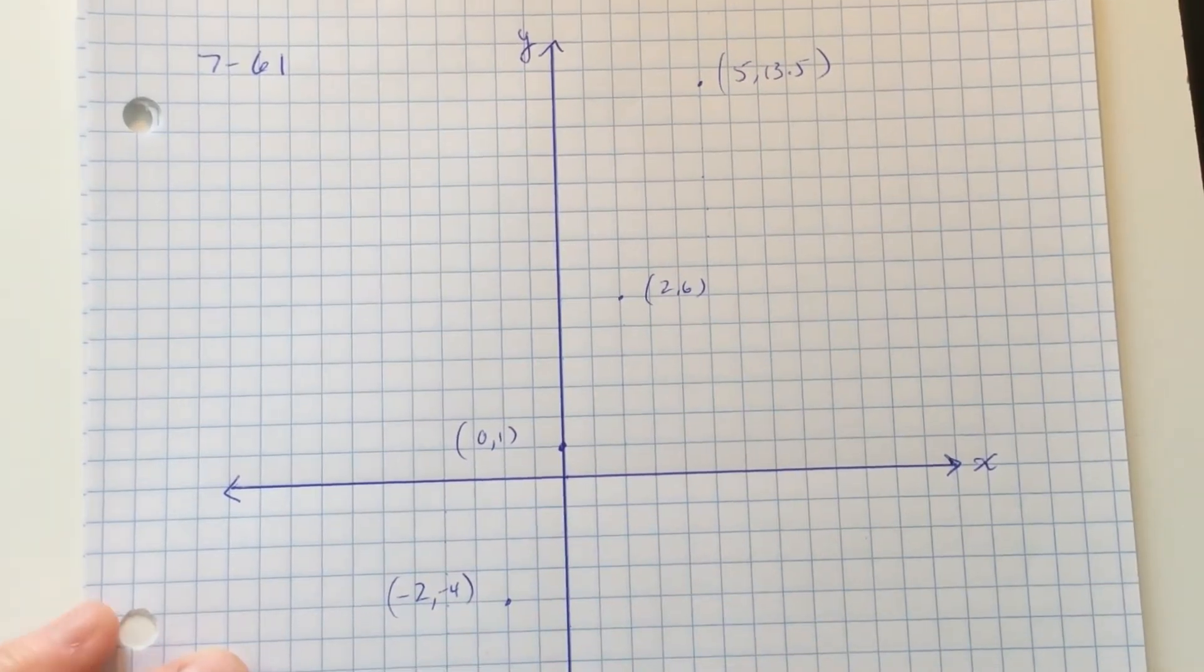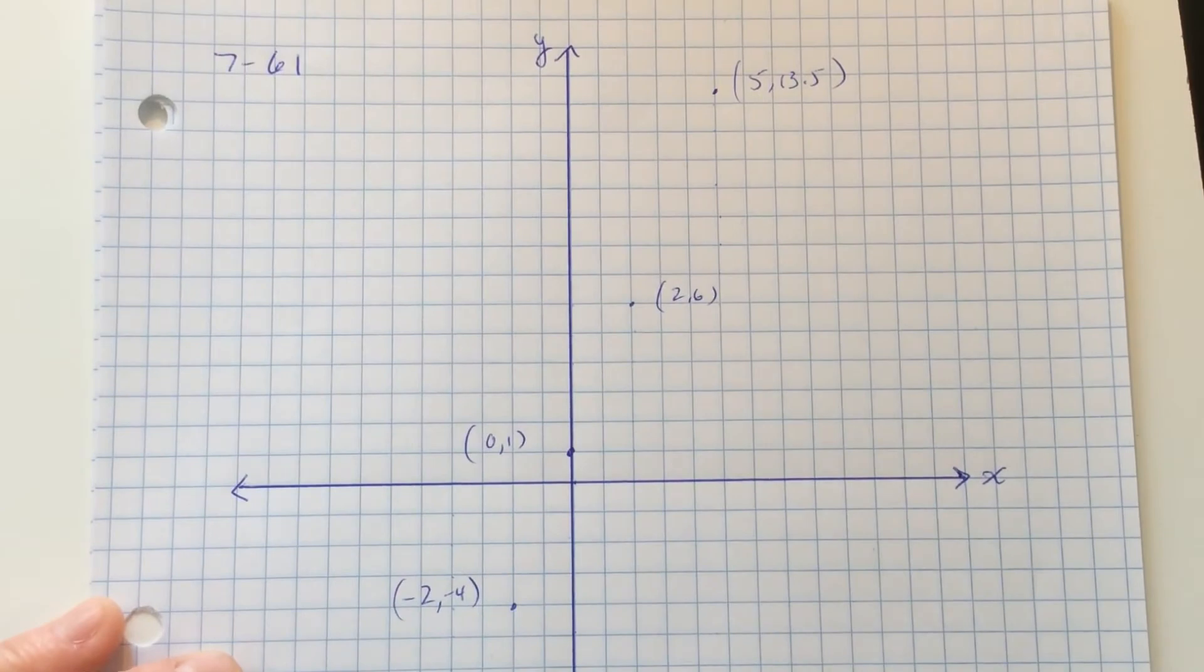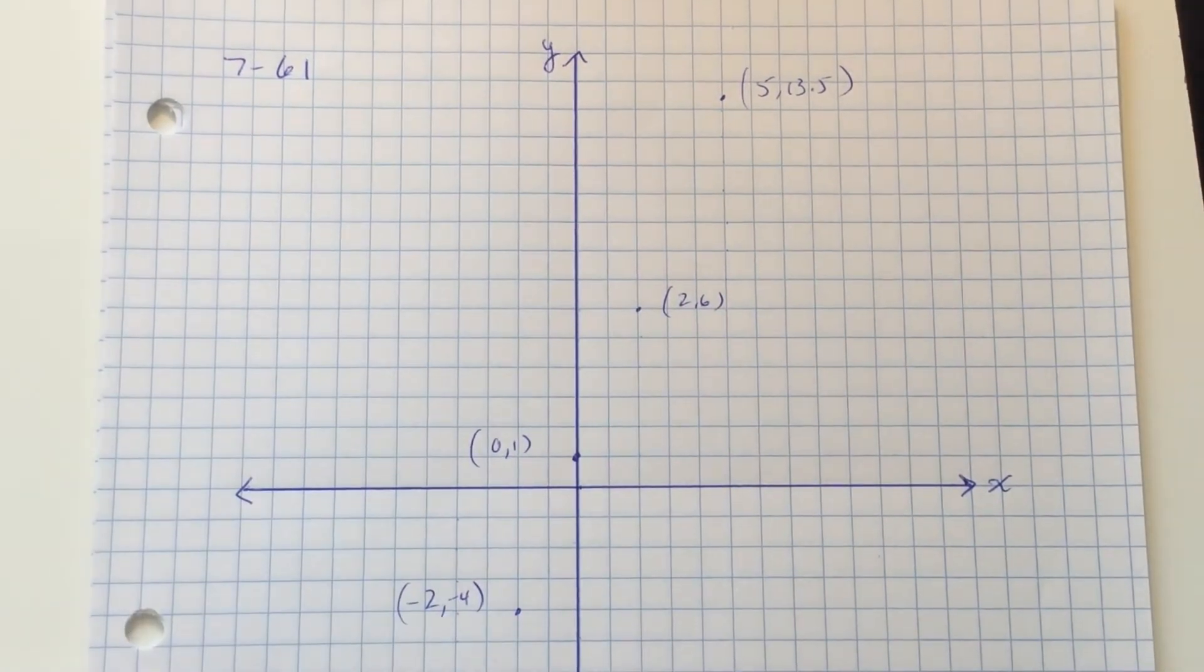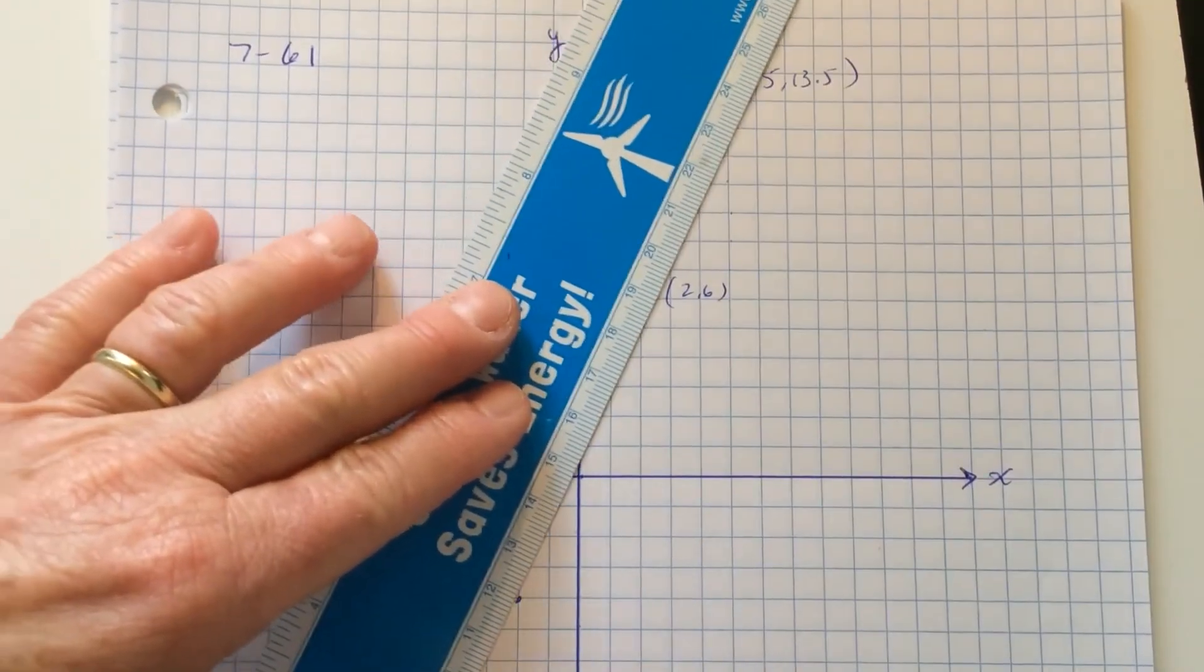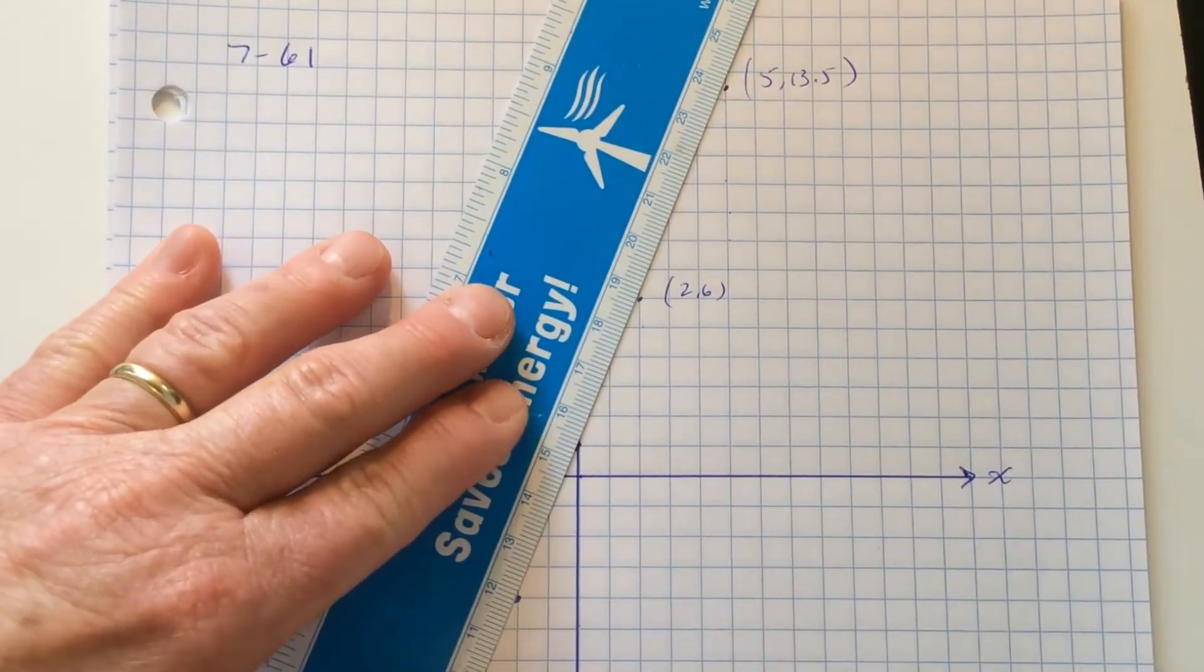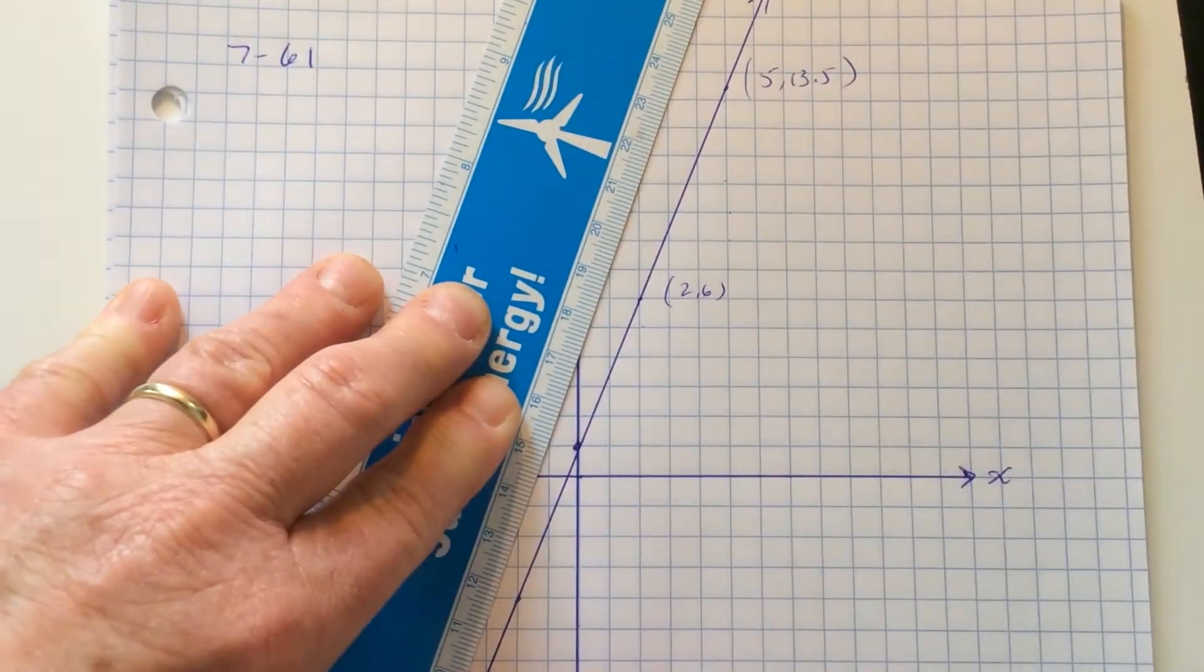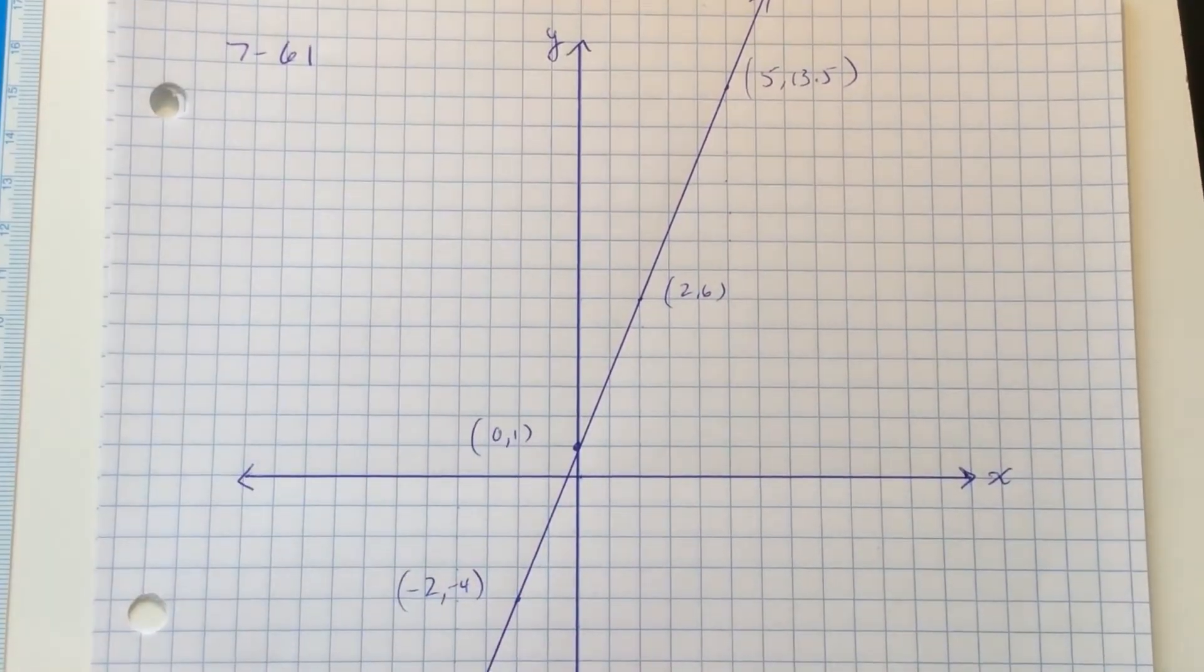Then it says find three different ratios to describe the slope. So, first I'm going to draw this line, and then I will find three different ratios.